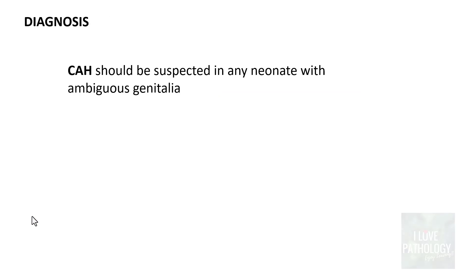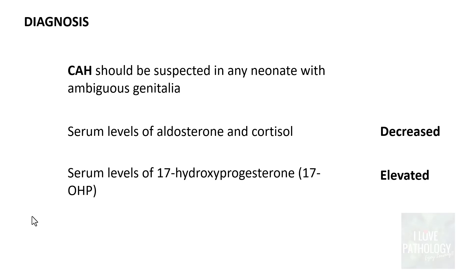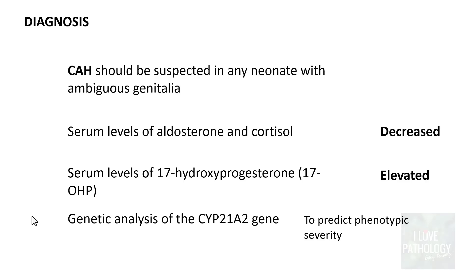For diagnosis, congenital adrenal hyperplasia should be suspected whenever a neonate presents with ambiguous genitalia. Serum levels of aldosterone and cortisol will be decreased. Serum levels of 17-hydroxyprogesterone will be elevated in the earlier forms. Genetic analysis of the CYP21A2 gene can also be done to predict the phenotypic severity.